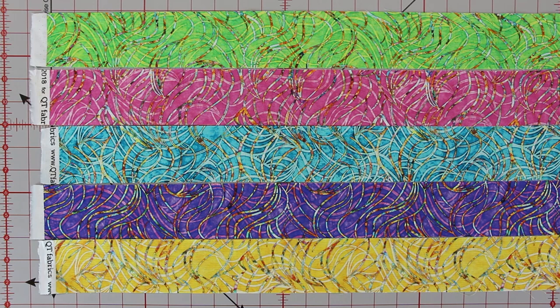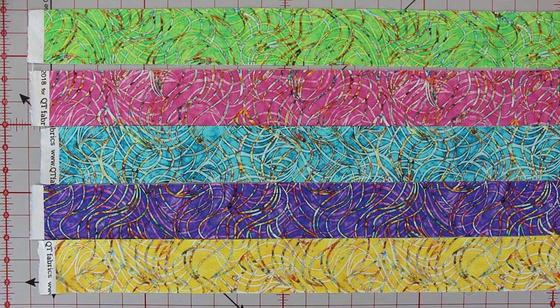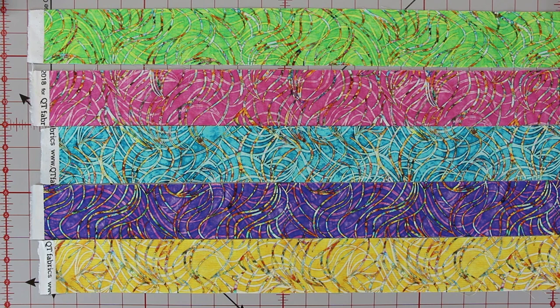First thing about rail fence is it's really simple. It's a matter of combining strips together to create a block. Now, rail fence could be three strips, four strips, five strips, six strips, whatever number of strips you wish to work with, you will need to adjust the size of each strip for the overall size of your block that you're creating.